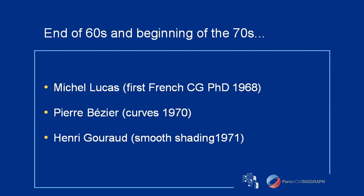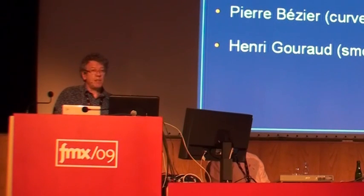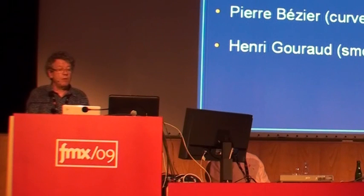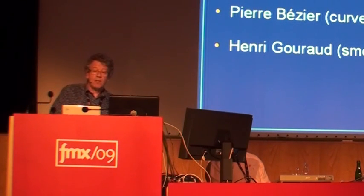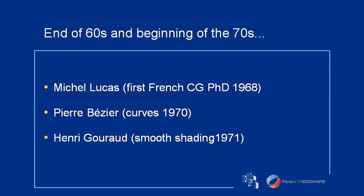In 1968, Michel Lucas was the first person in France to obtain a PhD in computer graphics. Note that around the same time in the US, SIGGRAPH was created. In 1970, Pierre Bézier, at Renault, created the curves we all still use today for typography, animation, computer-aided design and much more. And in 1971, the Frenchman Henri Gouraud held his PhD at the University of Utah about computer display of curved surfaces.